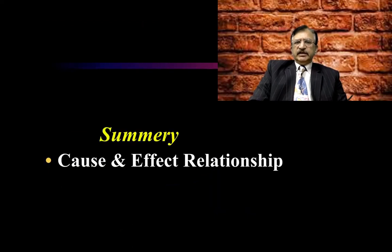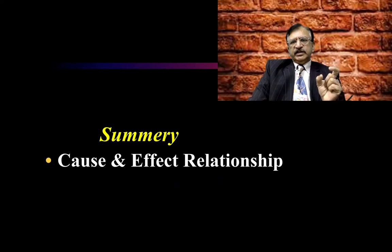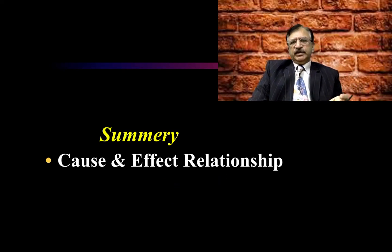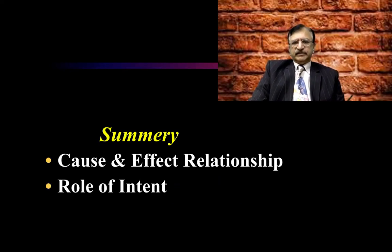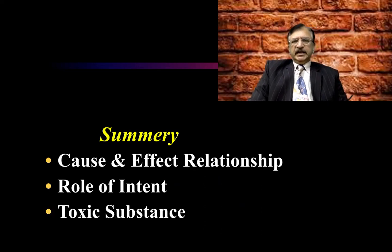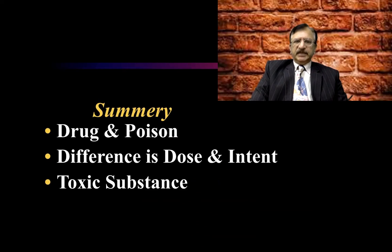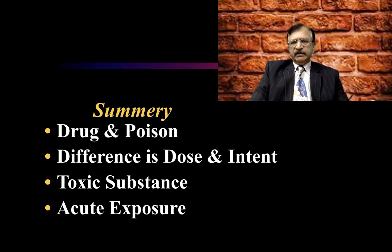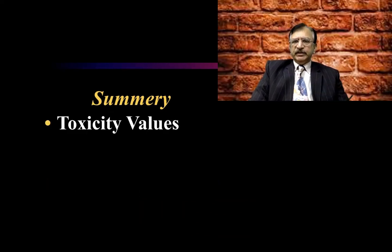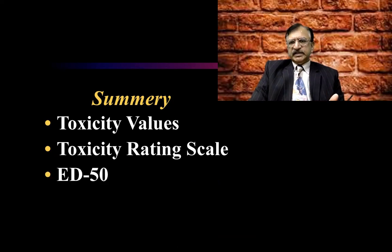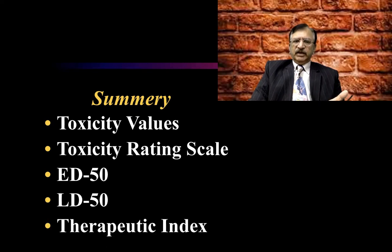In summary, we have learned the cause and effect relationship — first isolate and identify the poison, then establish the effect, with the poison at toxic level. We have discussed the role of intent, what is a toxic substance, the difference between drug and poison (primarily dose and intent), what is acute exposure, how to determine toxicity values and toxicity rating scales, ED50, LD50, and the therapeutic index.